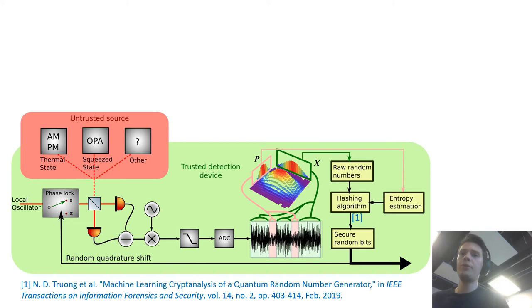Here is another view of the protocol and device. So we have this local oscillator here that we'll use to measure either X or P and we can toggle to those two quadratures using this phase lock here. And on the other side we have the entropy source which can be many things and we'll try a thermal state and squeezed state in particular.